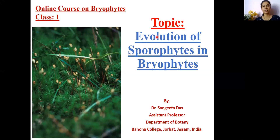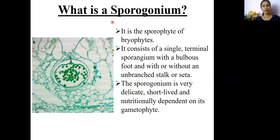Hello everyone, today we're going to discuss the topic: evolution of sporophytes in bryophytes. Before entering into this topic, let us first see what is actually meant by the term sporogonium. The sporophyte or sporogonium in bryophytes is the sporophytic structure developed in bryophytic plants. In this picture, you can see the capsule in the bryophytic plant called Riccia.